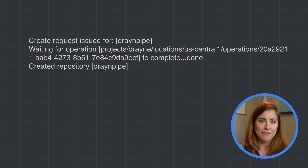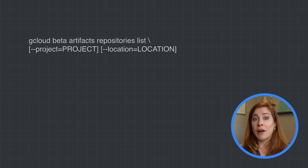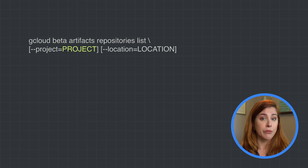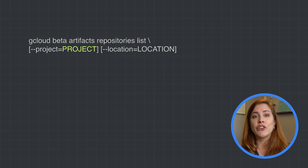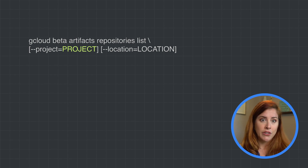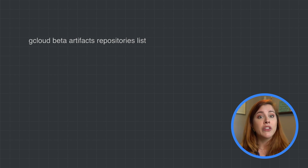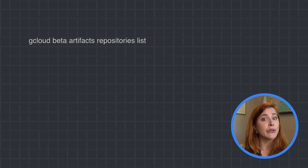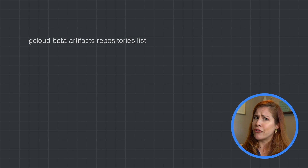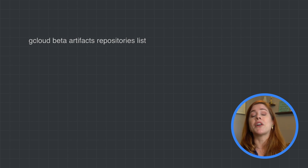And here is the result. To view a list of repositories, you'll want to run this command, where 'project' is the project ID. If you don't include this flag, then the current or default project is used. Use the location flag to view repositories from a specific location. You can also use 'location all' to list repositories across all locations. If you leave out the location flag, the command uses the default location if one is configured, and if there isn't a default, it lists repositories across all locations.